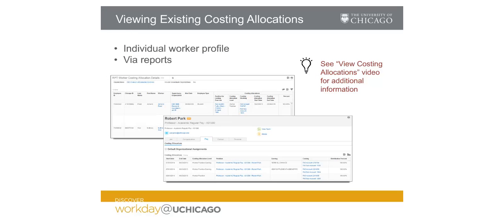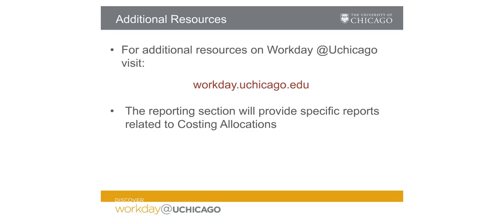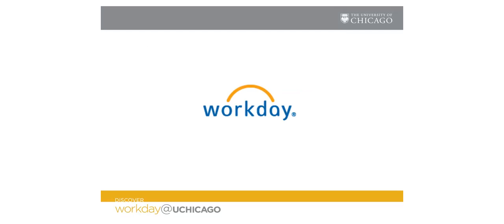Costing allocations can be viewed for specific individuals or in report format. Please see the Viewing Costing Allocations video for additional information. Additional resources on Discover Workday at UChicago can be found at workday.uchicago.edu. The reporting section of workday.uchicago.edu will provide specific reports related to costing allocations. Thank you for viewing the tutorial on assigning costing allocations in Workday.